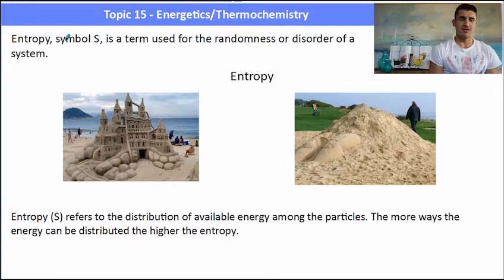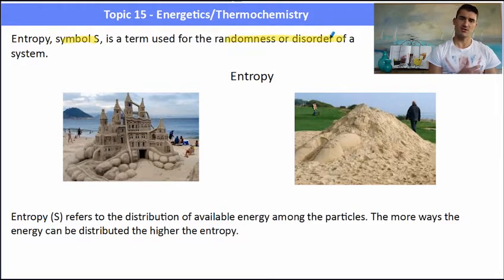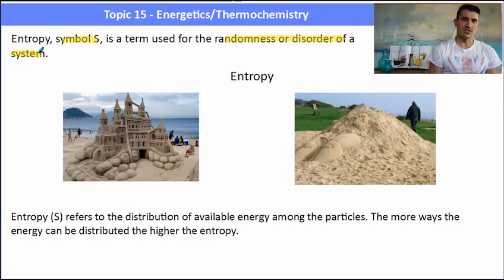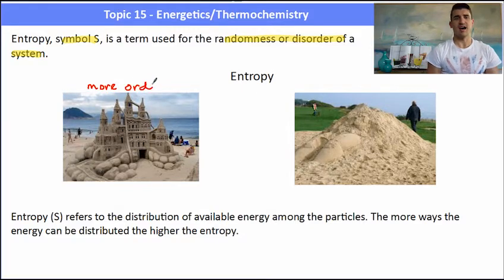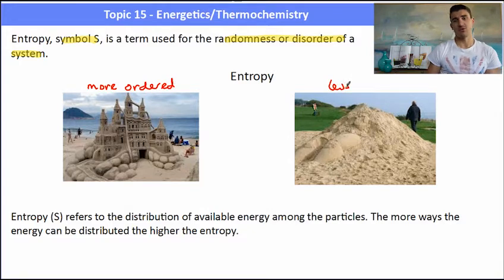Entropy, given the symbol delta S, is a term used for the randomness or disorder of a system. I've got two images here. One is an extremely ordered system, and one is a very unordered system. The sandcastles on the left are very much an ordered system. The sandcastle on the right is a less ordered system.